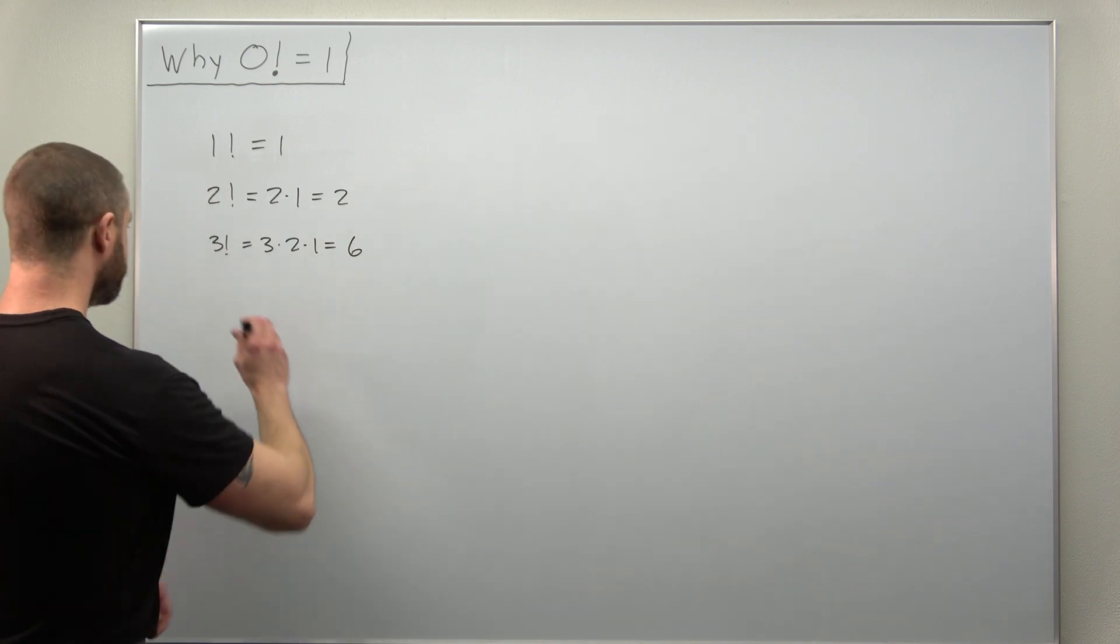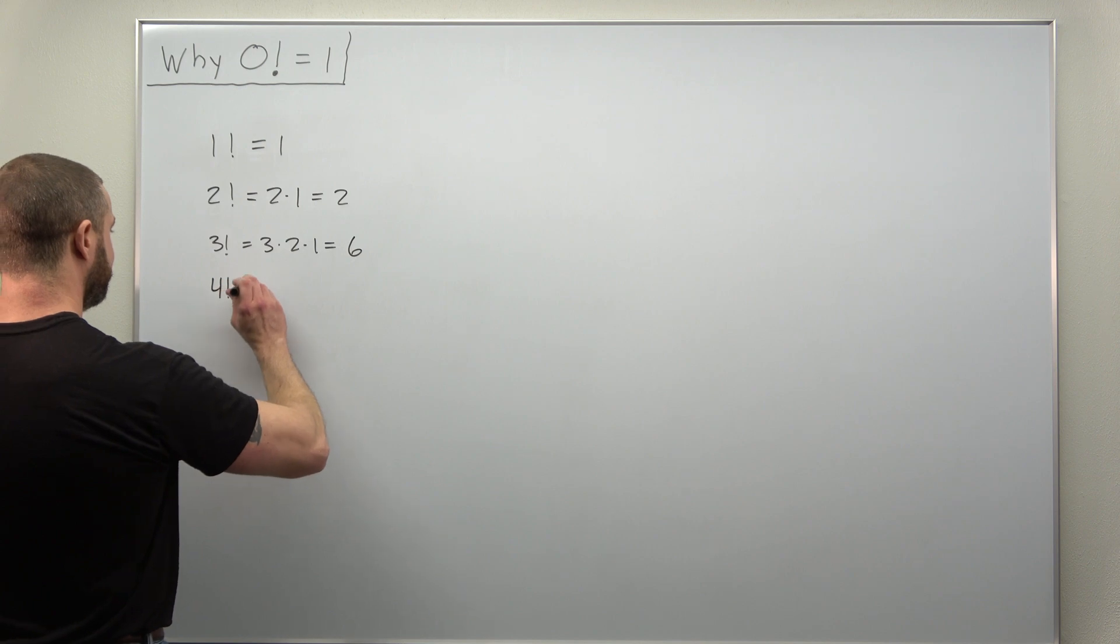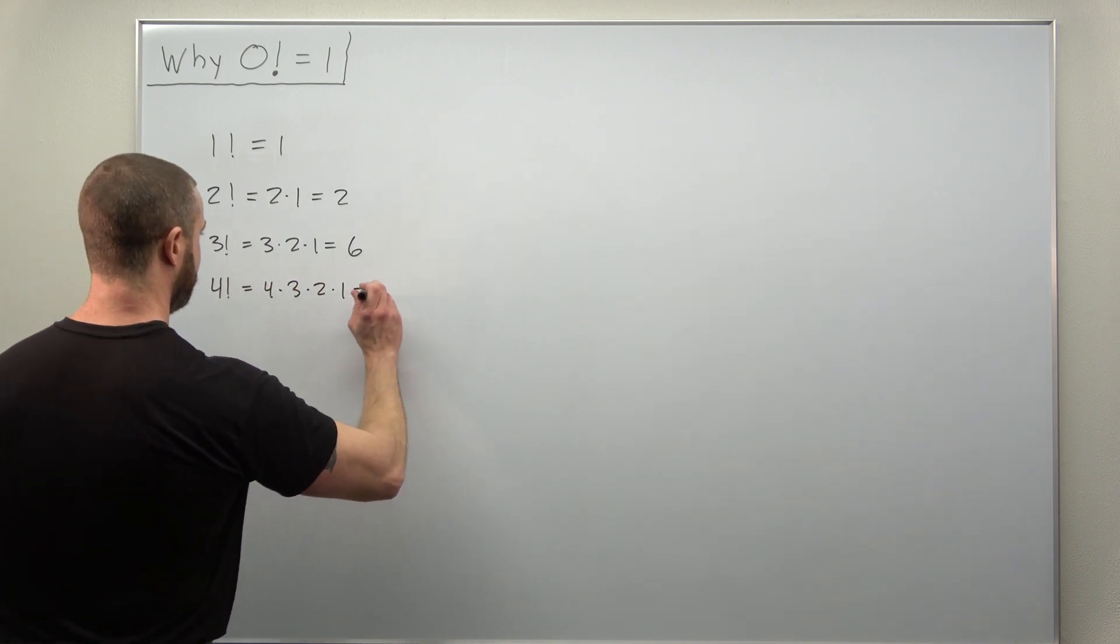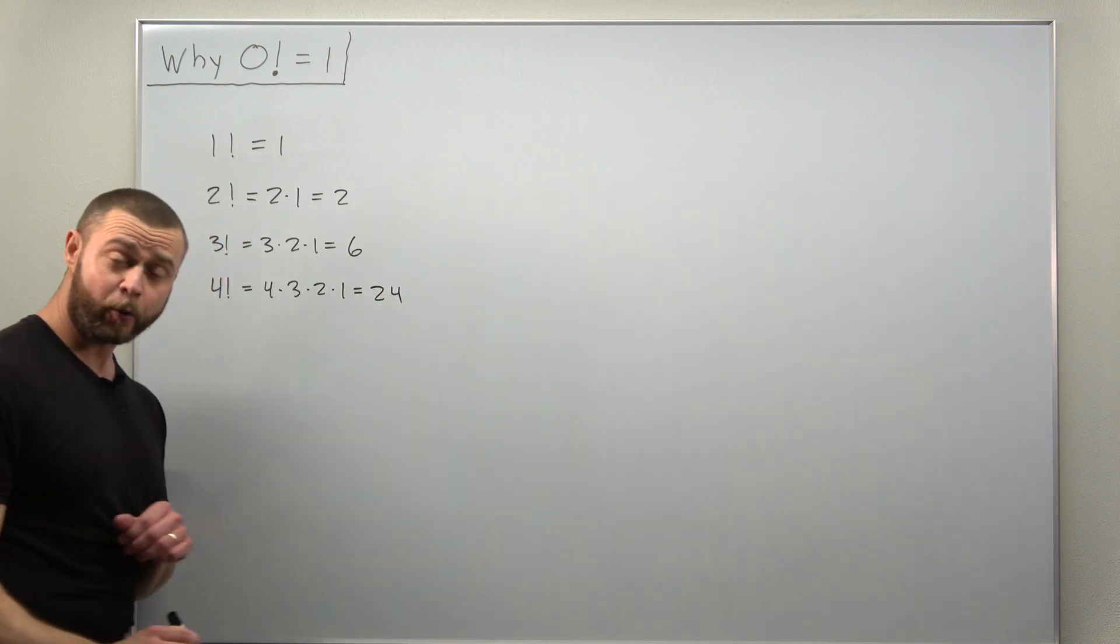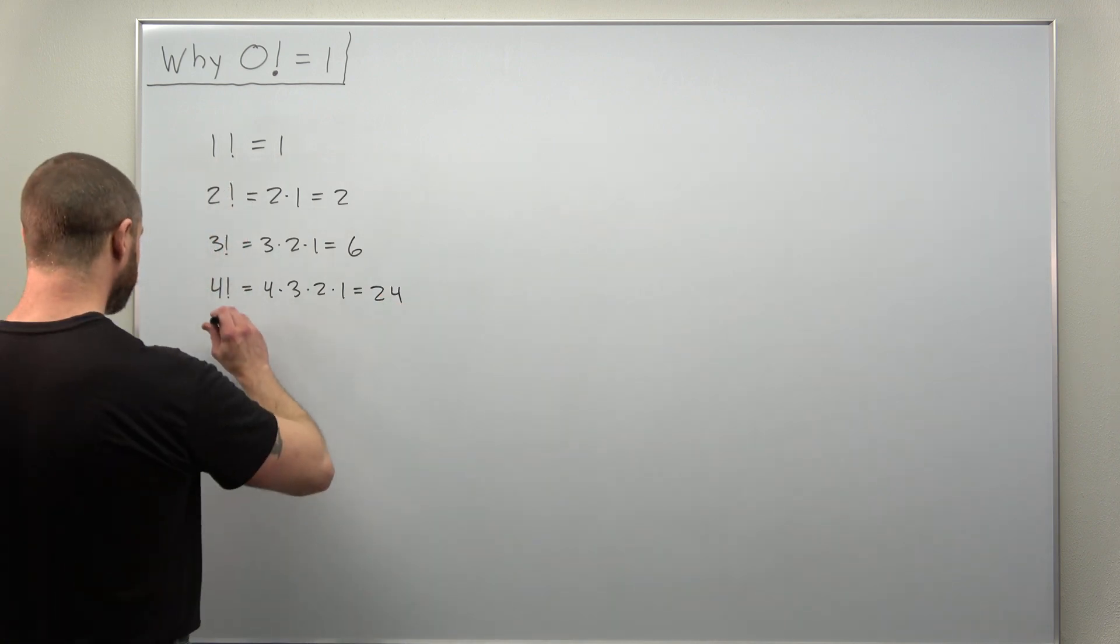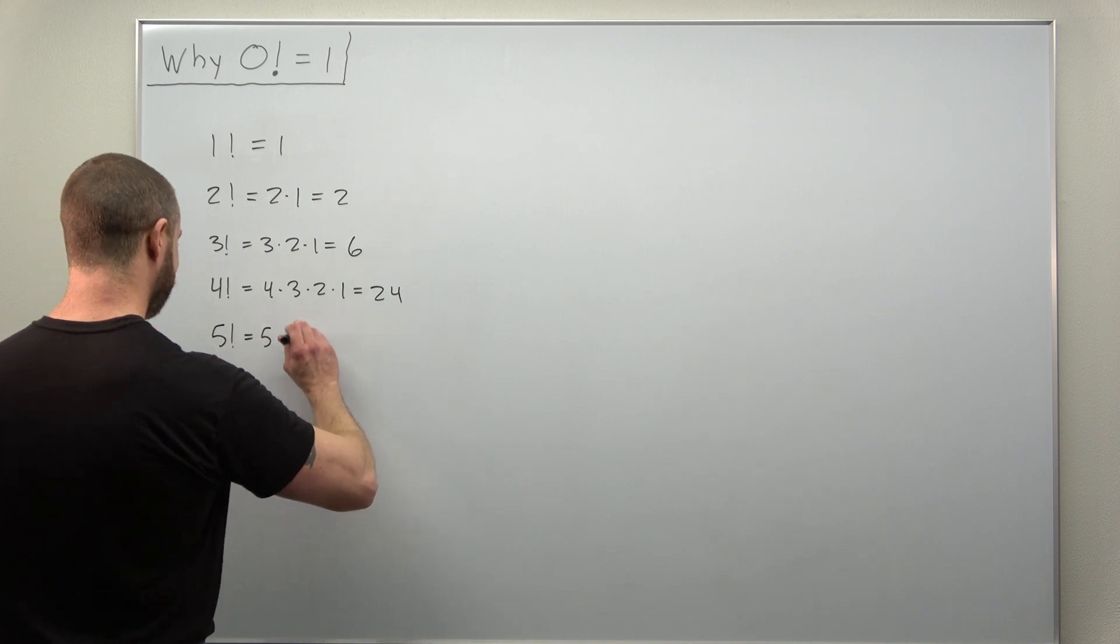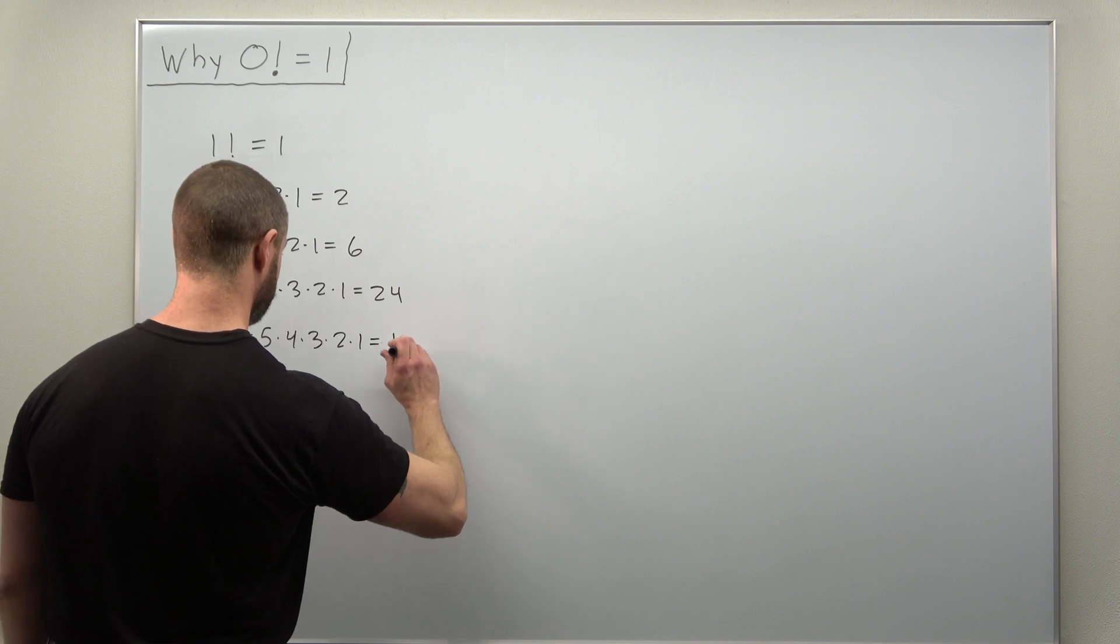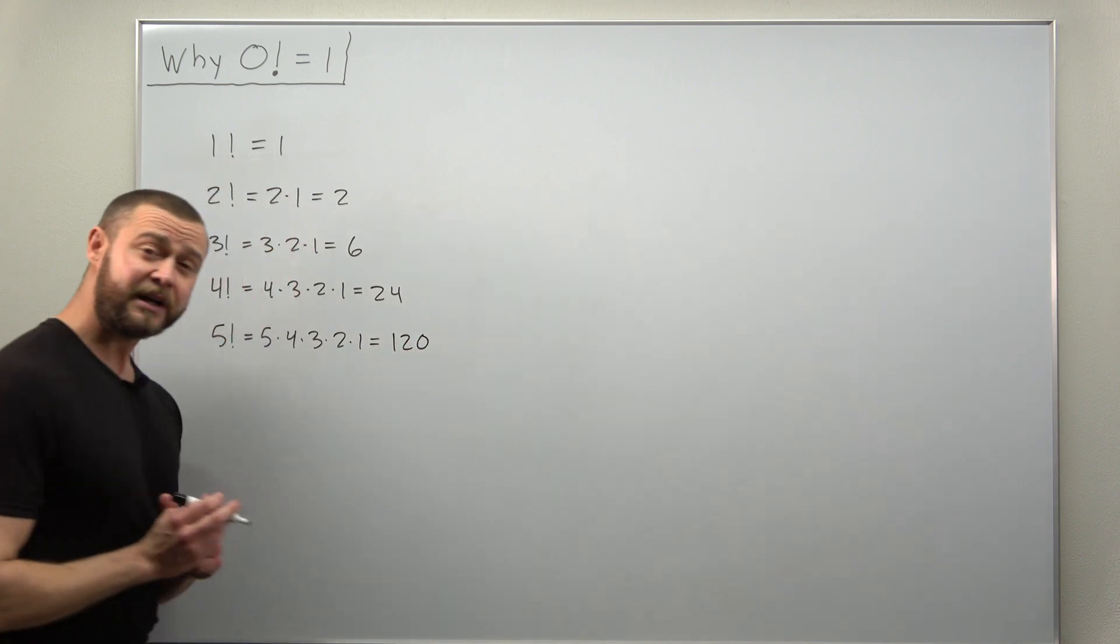Let's go a few more. Four factorial - that'll come out to twenty-four. Five factorial: five times four times three times two times one. That comes out to one twenty.